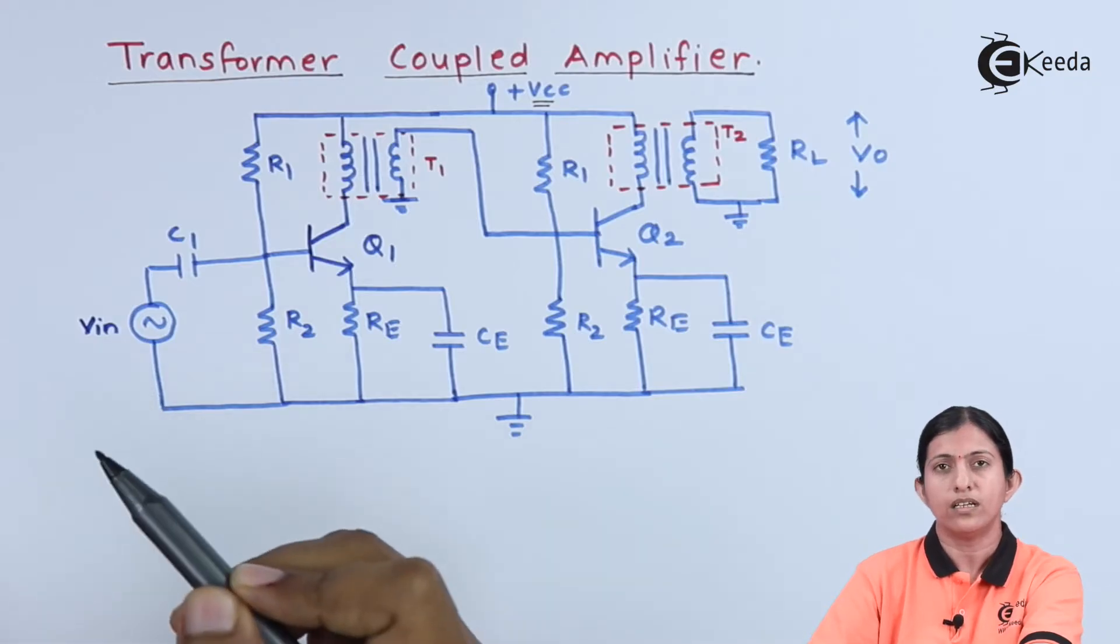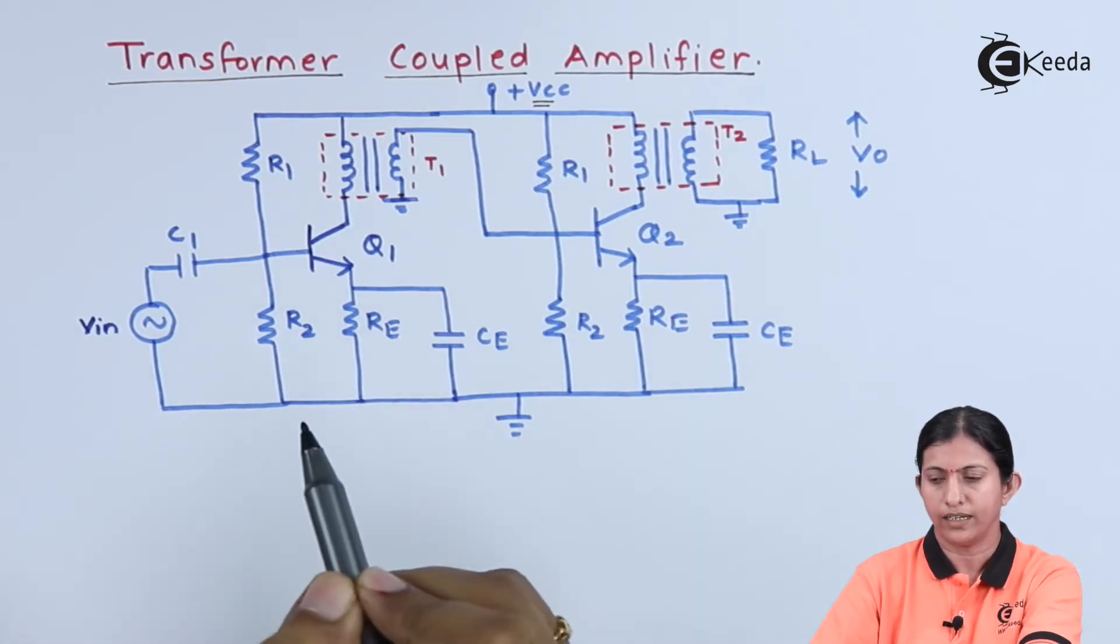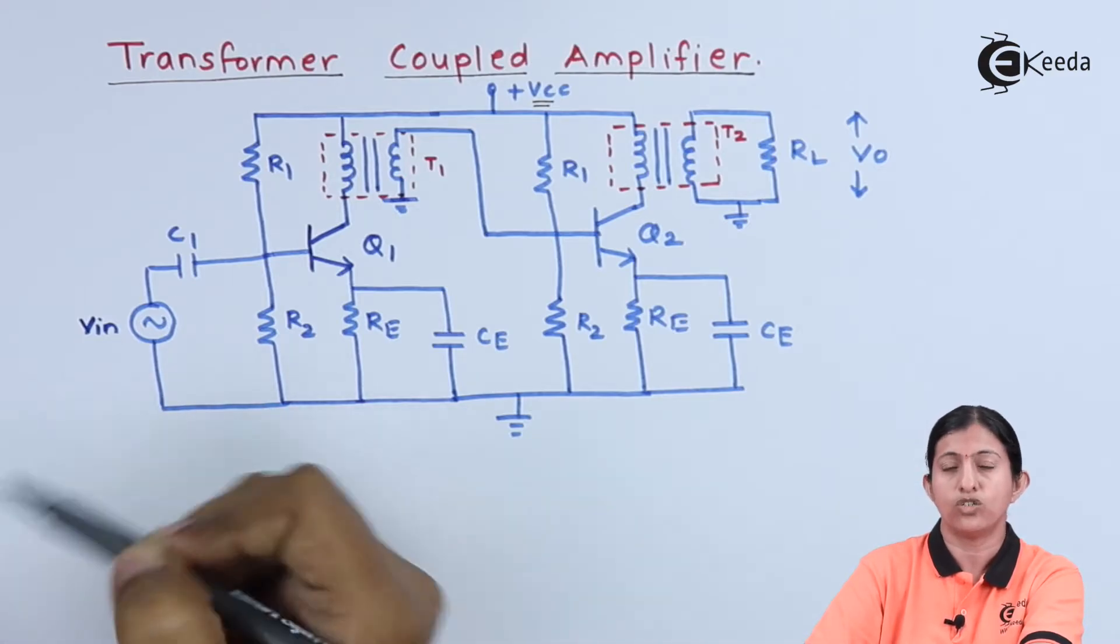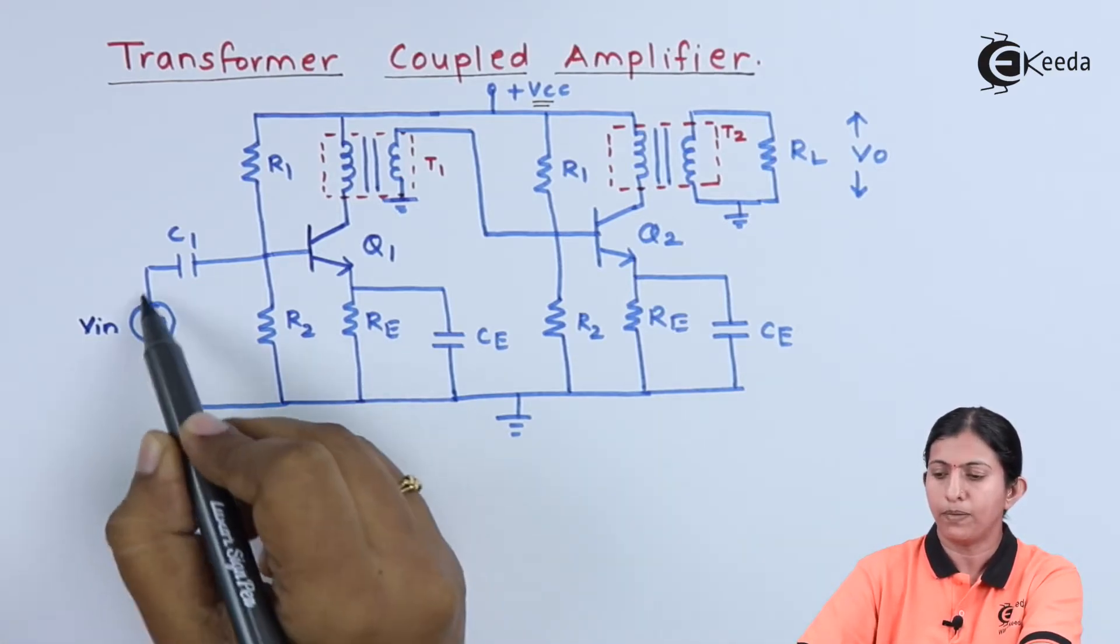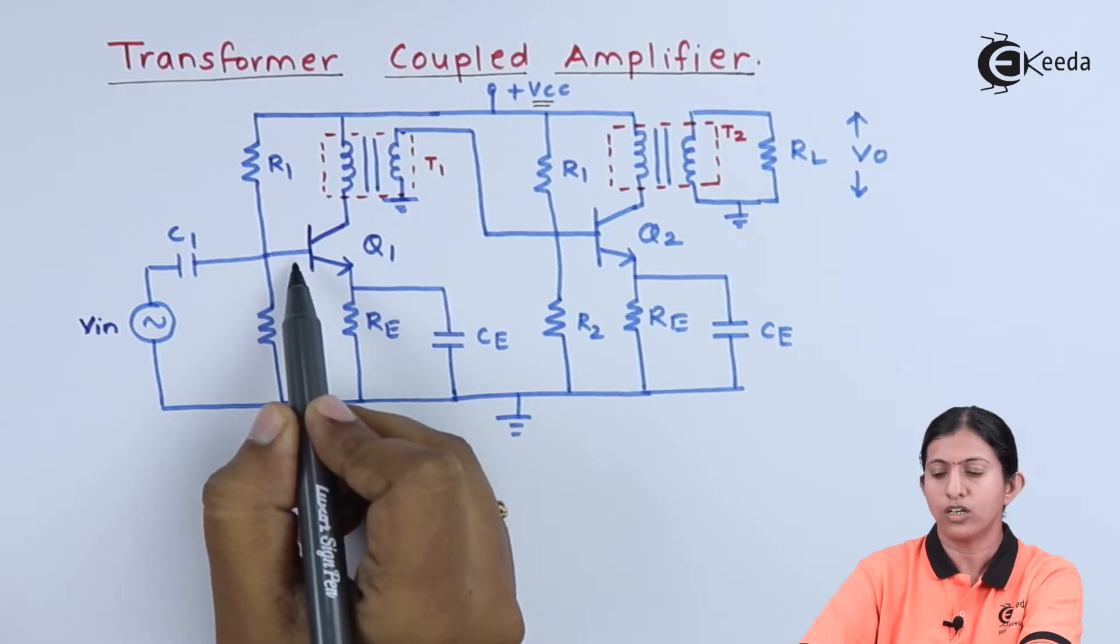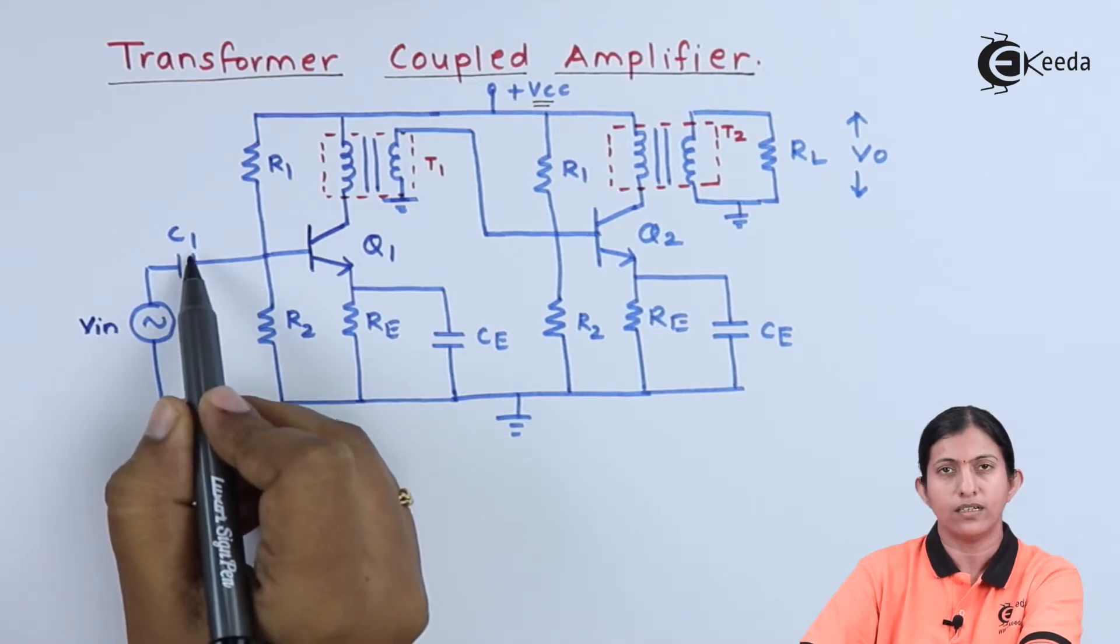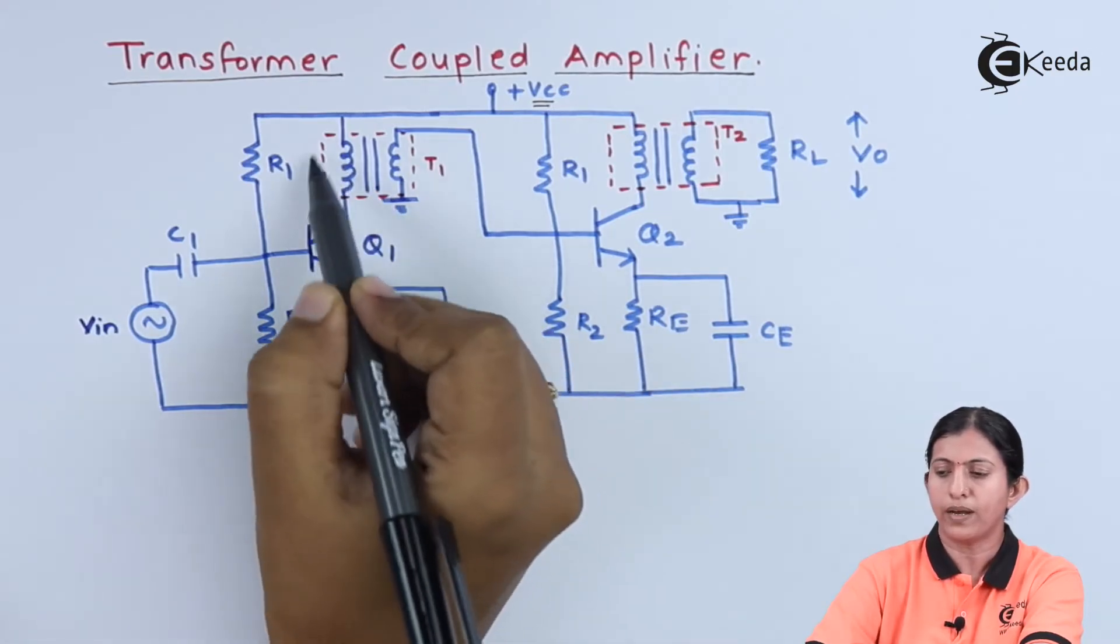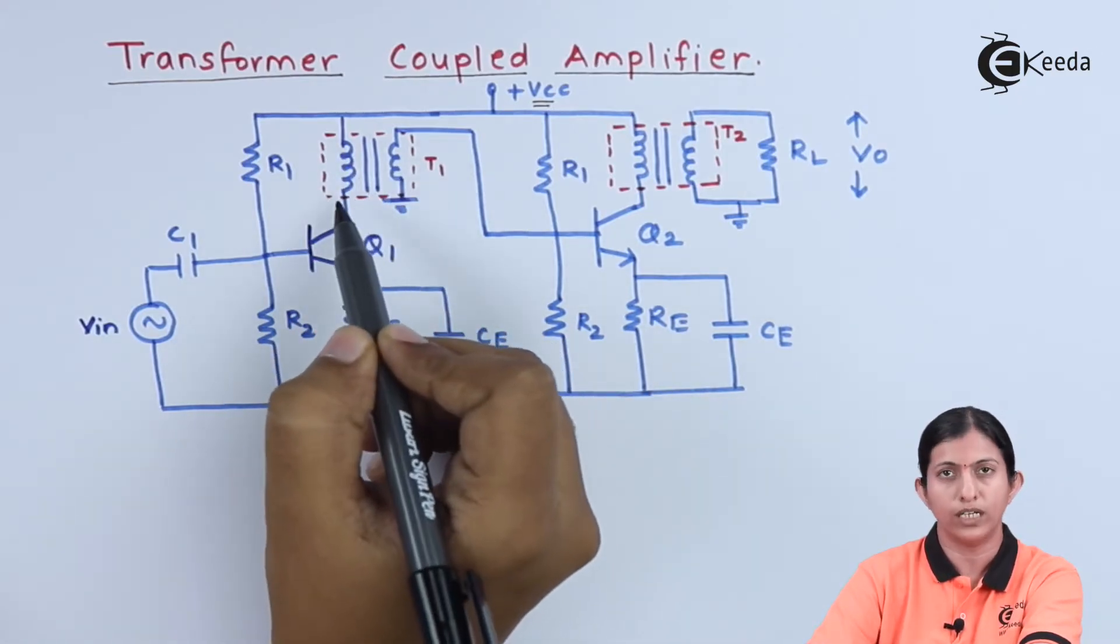When we consider the operation of this circuit, VIN, which is a weak input signal to be amplified, is applied to the base of transistor Q1 through capacitor C1. The amplified signal is available across the primary winding of transformer T1. If we adjust the number of turns properly, maximum energy will flow from the primary winding to the secondary winding.